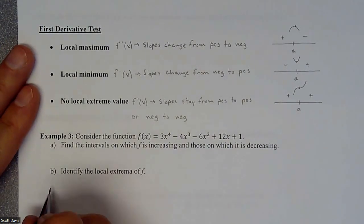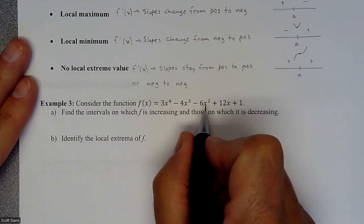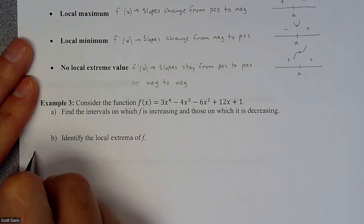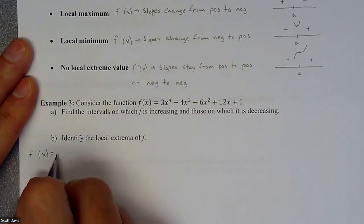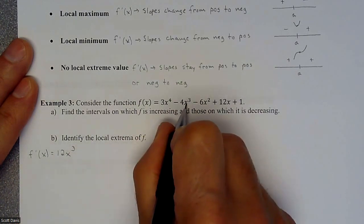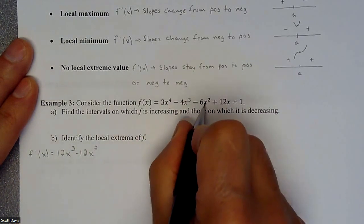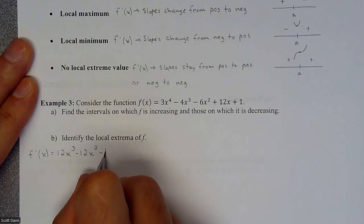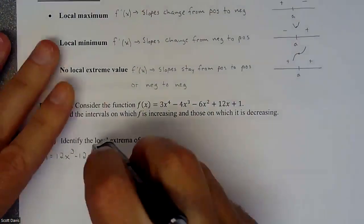First thing is we're going to take the derivative of this, because the derivative tells us everything about the slope. So our derivative is going to be 12x cubed minus 12x squared minus 12x plus 12.